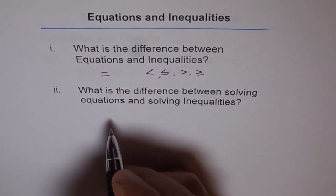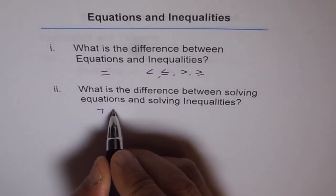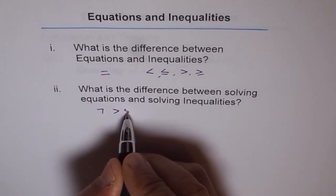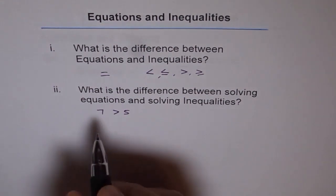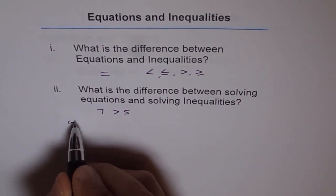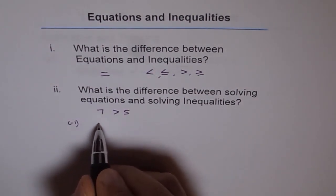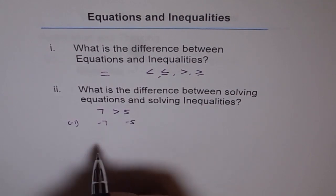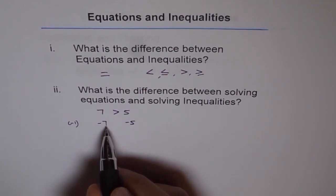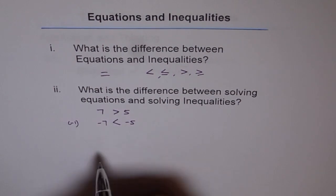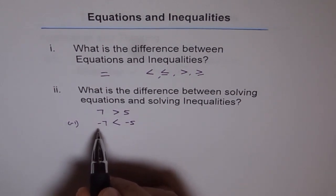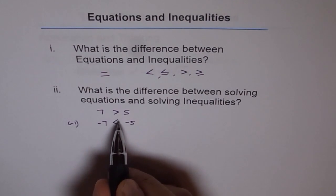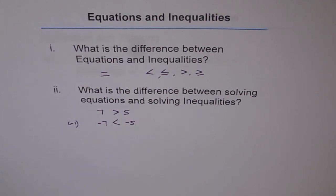But in case of inequality, if you do multiply or divide by a negative number, then you have to change the sign of the inequality. For example, let us say we have 7 greater than 5. Now if I multiply by minus 1 on both sides, it becomes minus 7 and minus 5. You will note that minus 7 is actually less than minus 5. So when you multiply or divide by a negative number, the sign changes, and you need to take care of this.